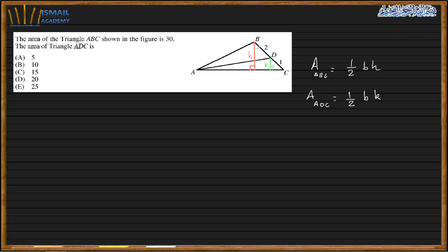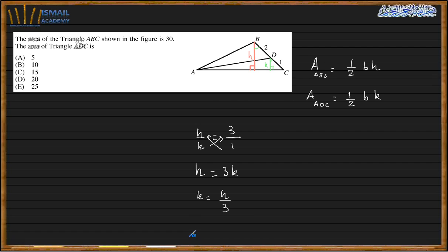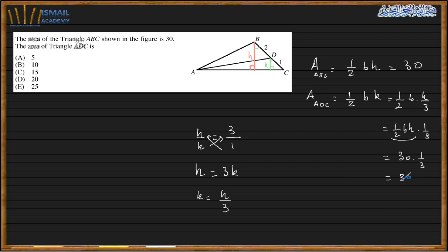So h over k equals BC, which is 2 plus 1, over DC, which is 1. Cross-multiplying, we get h equals 3k, so k equals h over 3. This means the area of triangle ADC is one-half times base times h over 3, which is one-third of the area of the big triangle. That area is 30, so the area of ADC is 30 times one-third, which is 10. So B is my choice.